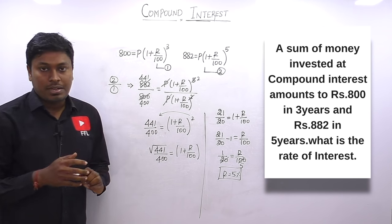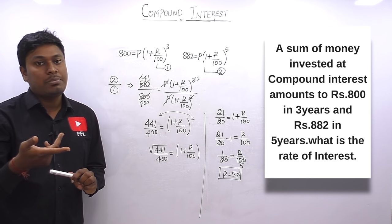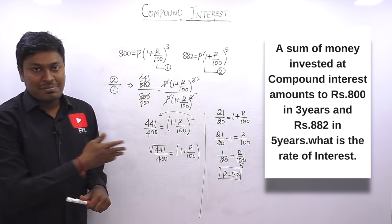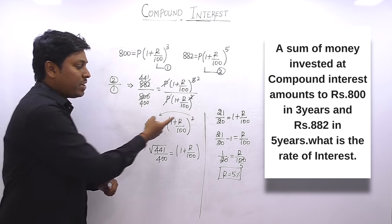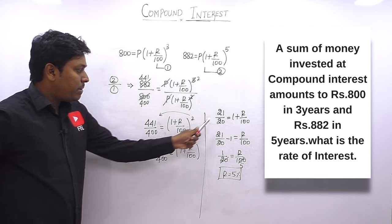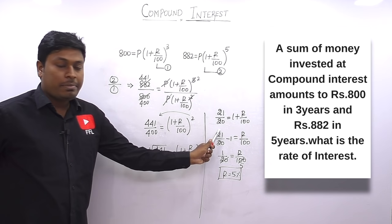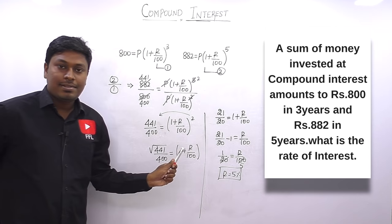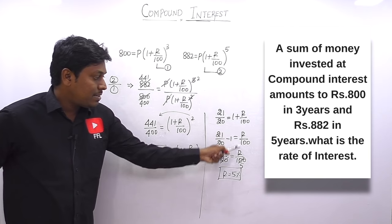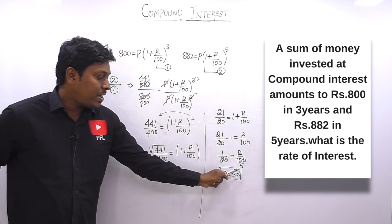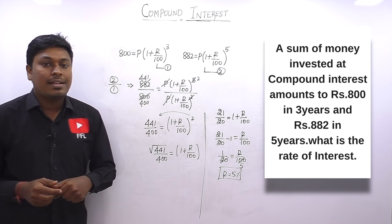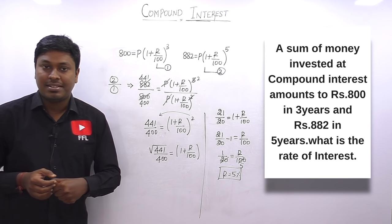For question two, the rate of interest is 5%. The key steps: substitute the data in the formula, divide equation two by equation one, bring the power to the left (becoming a root), evaluate the root, and bring +1 to the left as −1. After cancelling, the rate of interest is 5%.